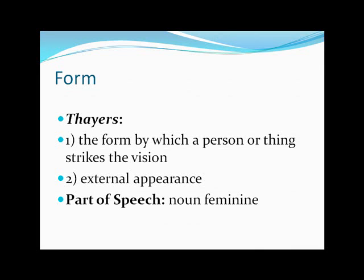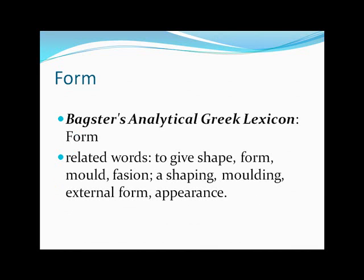Theos Greek says the form by which a person or thing strikes division — external appearance. The noun feminine is part of speech. Note the second definition: external appearance. Baxter's Analytical Greek Lexicon has 'form' as the main definition. Related words include: to give shape, form, mold, fashion, a shaping, molding, external form, apparent. So Morphe is relating to the outward expression, the outward appearance, the outward shape of something. In fact, that's how the word Morphe is used throughout the LXX — every time it is used, it's speaking of the outer form of a thing.